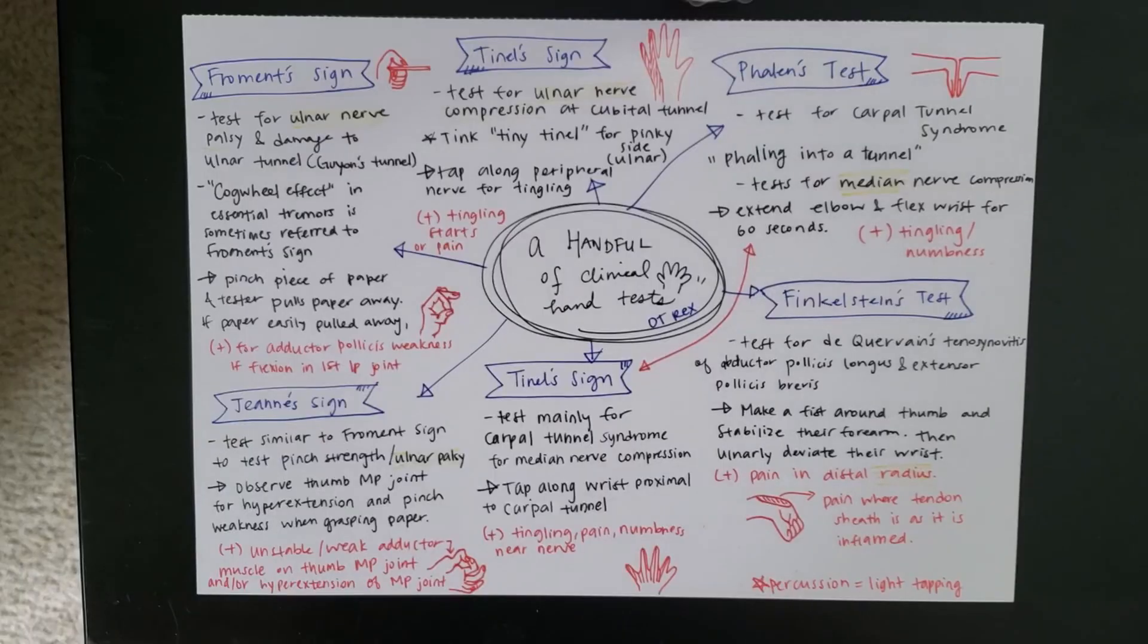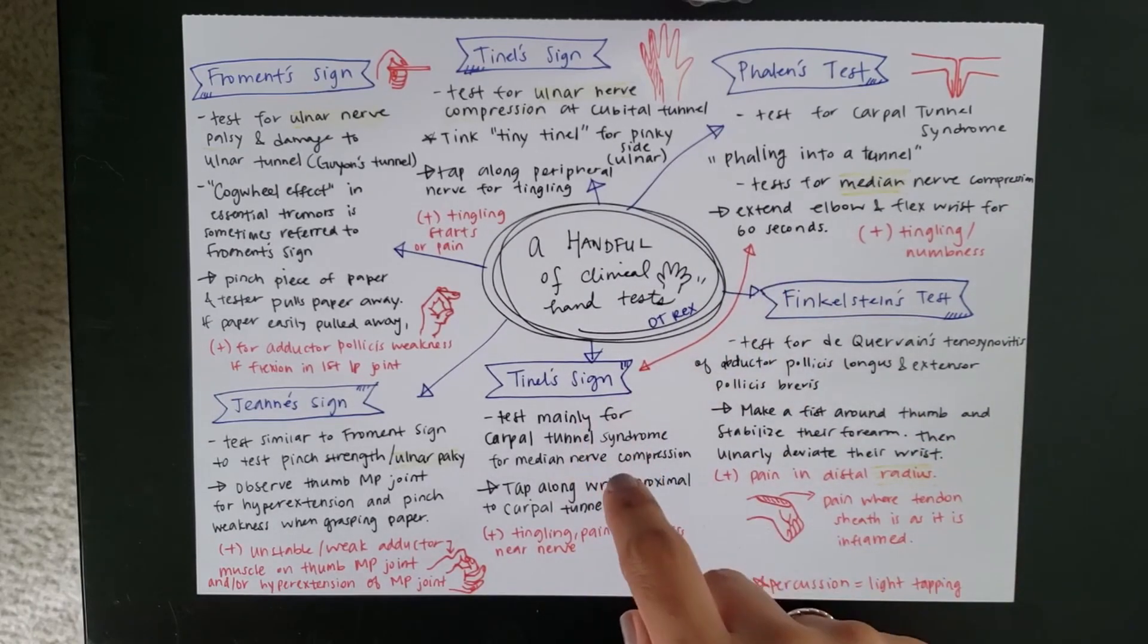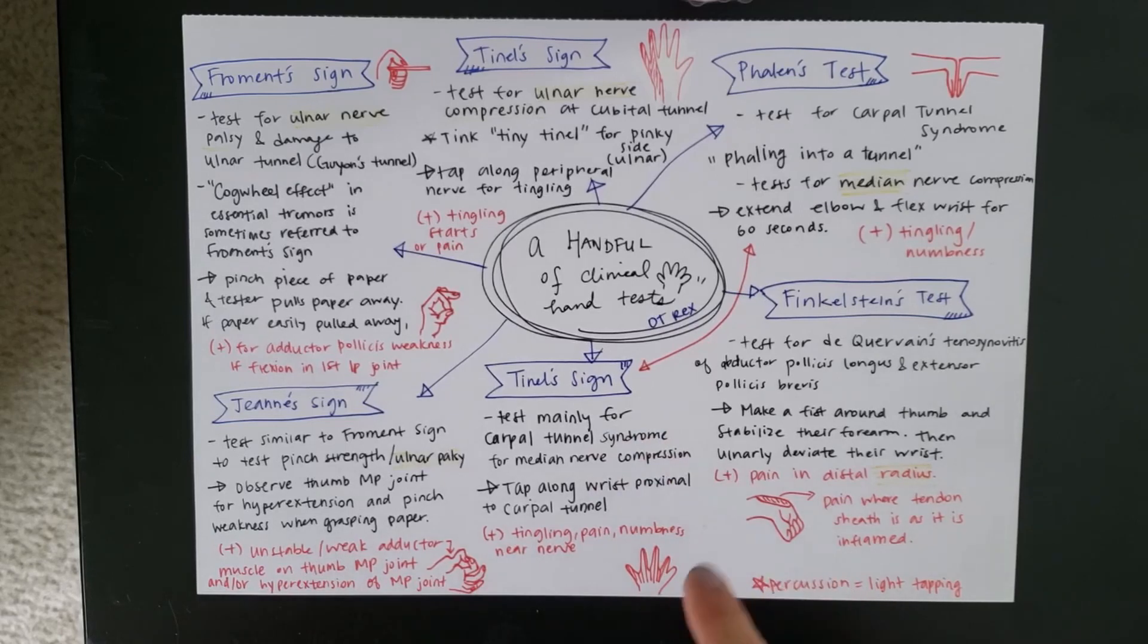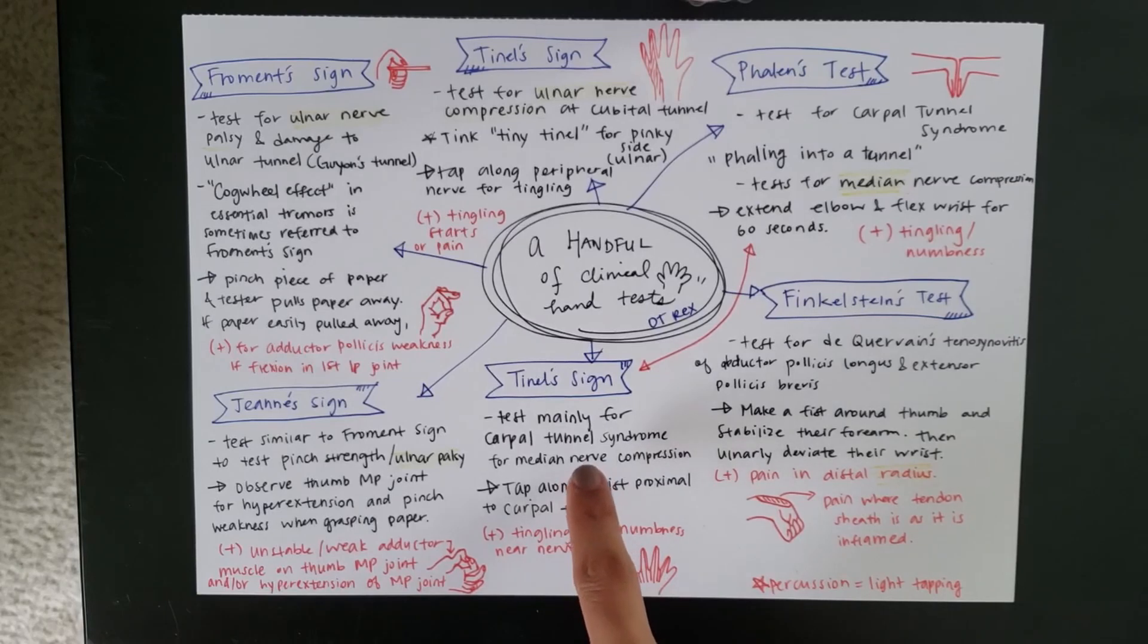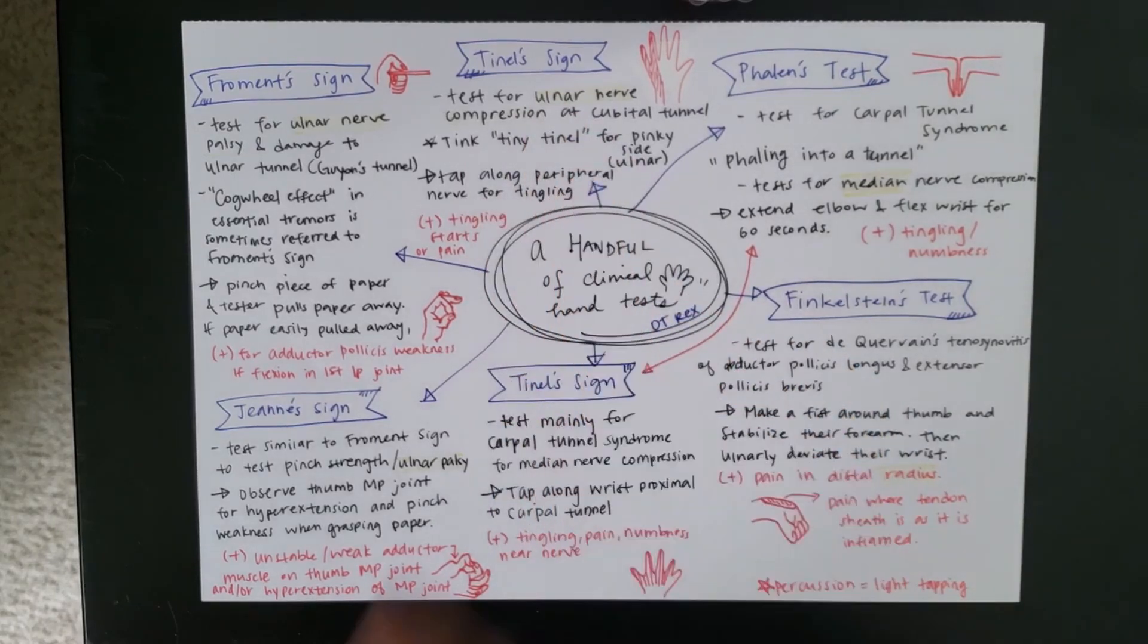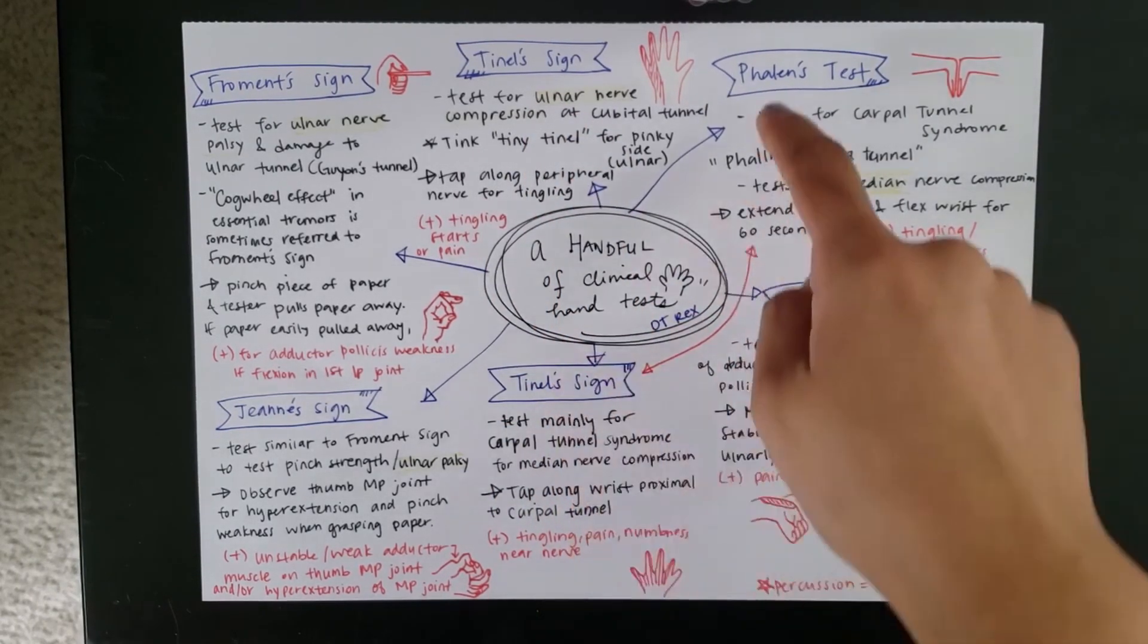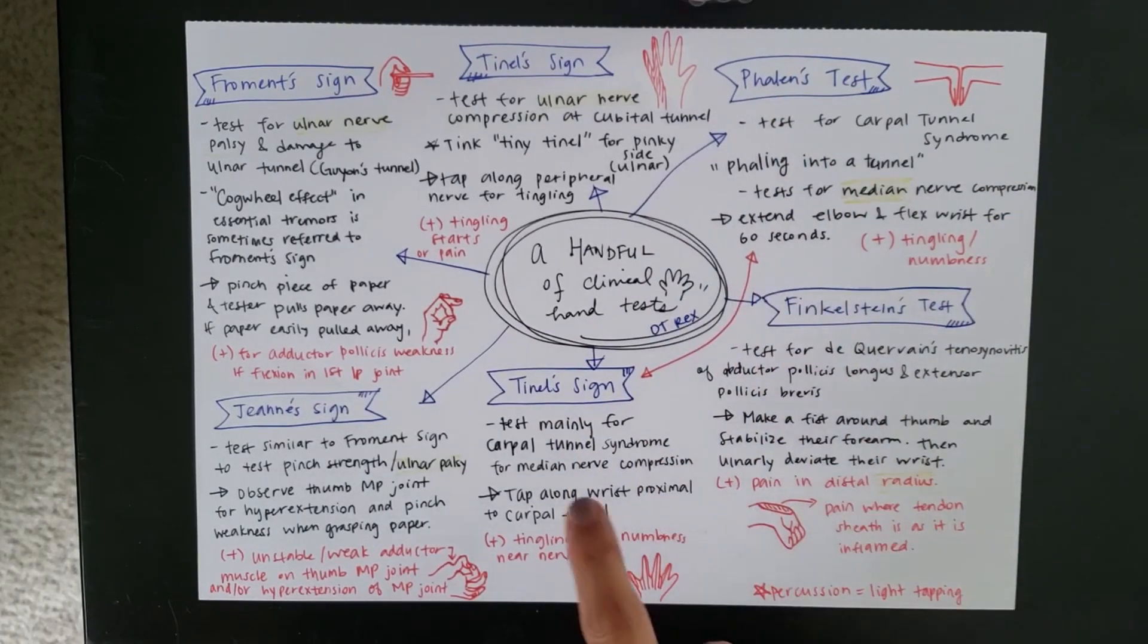So, I made a little link here with Tinel's sign. Because Tinel's sign tests for a variety of things. And I wanted to specify the difference. So, we're going to go down here. Because this one is also testing for carpal tunnel syndrome. Tinel can test for carpal tunnel as well as cubital tunnel. So, I'll do this one after. But remember that Tinel and Phalen are both able to test for the carpal tunnel.